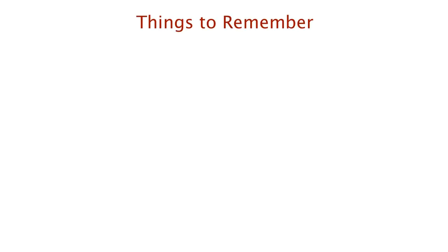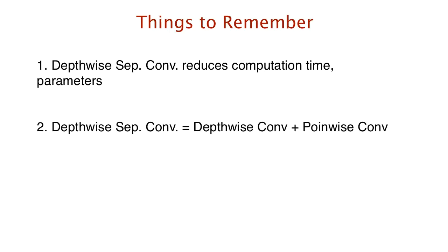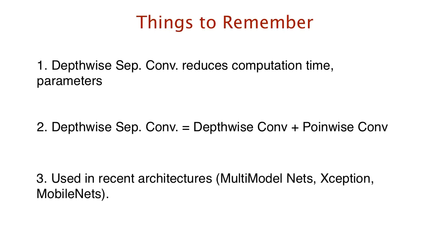To summarize: depthwise separable convolution decreases both computation and number of parameters compared to standard convolution. It combines depthwise convolution — the filtering step — followed by pointwise convolution — the combining step. These have been successfully implemented in architectures like multi-modal networks, Xception, and MobileNets.